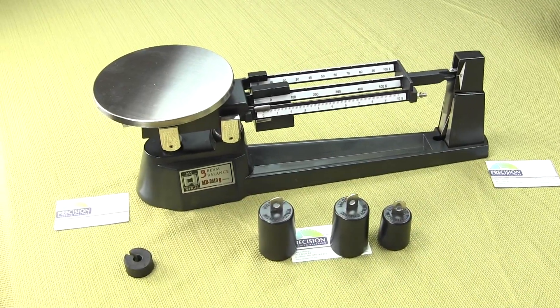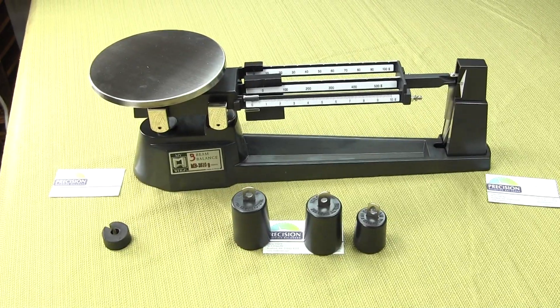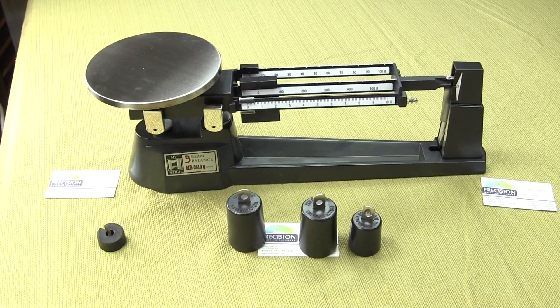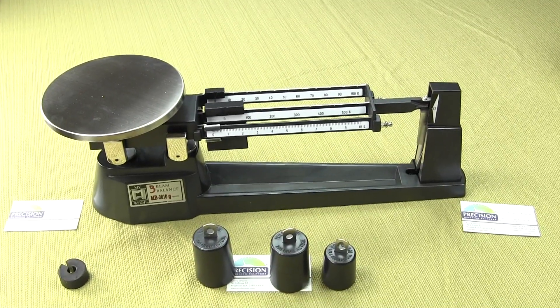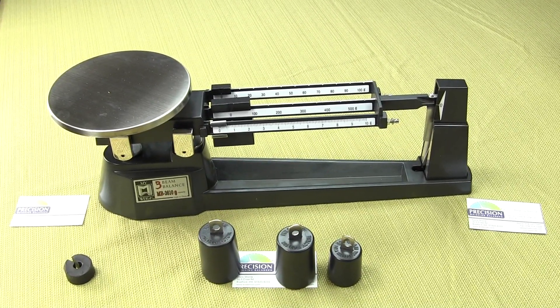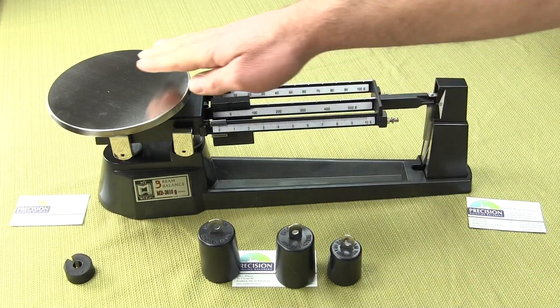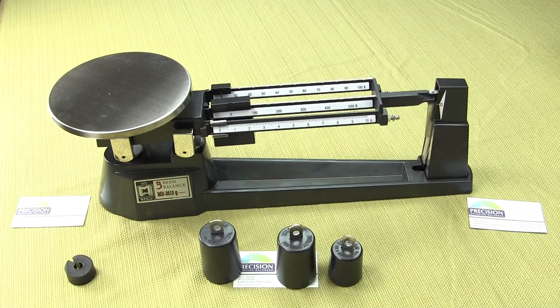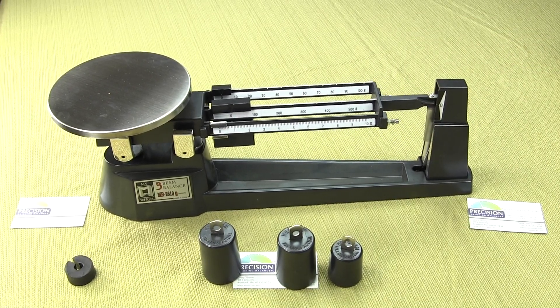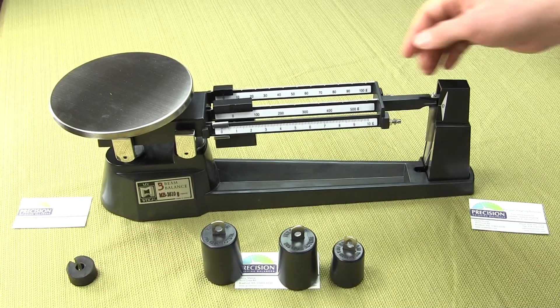We're going to discuss some of the features and how to set up the three beam balance. The triple beam balance measures mass of an item, and mass is defined as a measurement of how much an object is pulled down by gravity. We have a pan here and there's three beams. The triple beam balance got its name because of the design of the three beams.